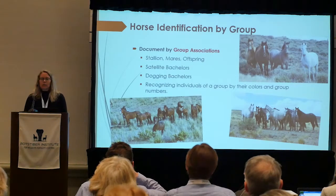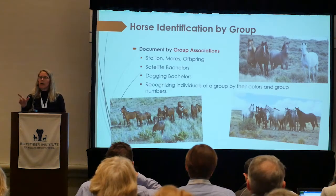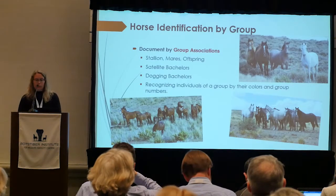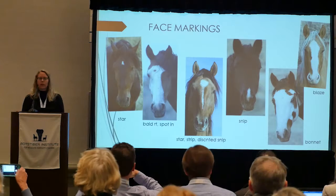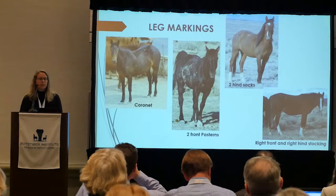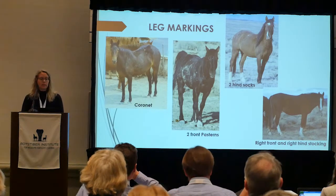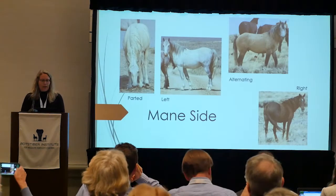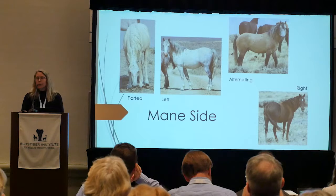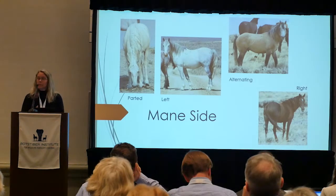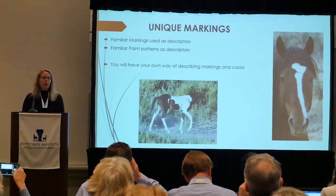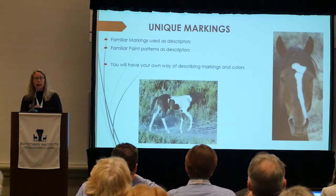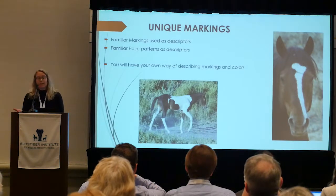Recognizing individuals of a group by their colors and group numbers is important — I might be able to identify individual groups and say, 'I've got treated mares in that group,' or 'That stallion has five bays, that dun horse has two grays and a liver chestnut.' For face and leg markings, make it simple and consistent. We use just four things: coronet, pastern, socks, and stockings. For mane side: parted, left, alternating, right. You've got unique markings too — this stallion has a femur bone shape on his head, so we called him Femur.